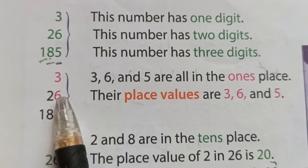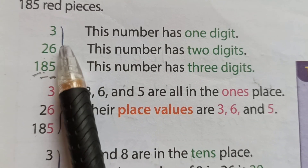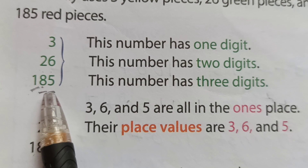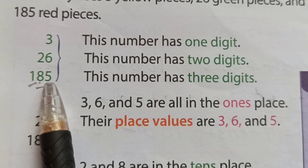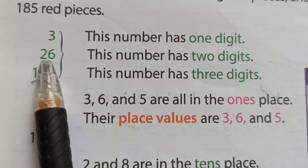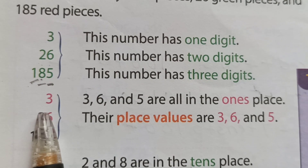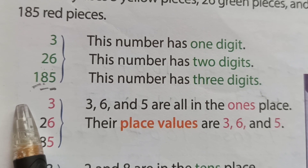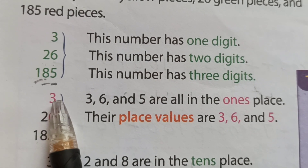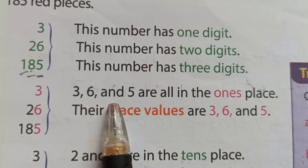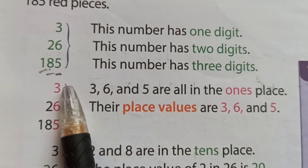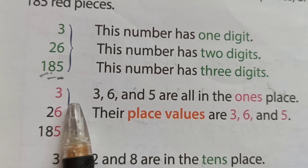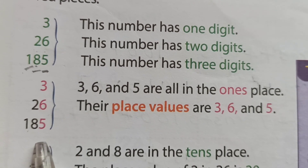3 has one digit. 26 has 2 digits. 185 has 3 digits: 5 in 1's, 8 in 10's, and 1 in 100's. So 3, 6, and 5 are all in the 1's place. Their position is 1's place, and their place values are 3, 6, and 5 respectively.